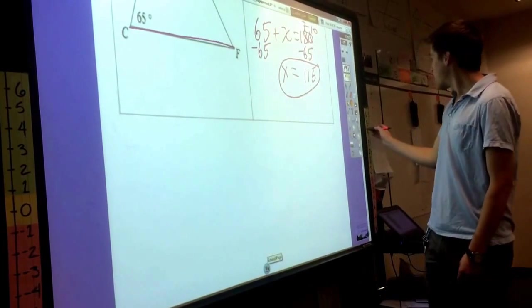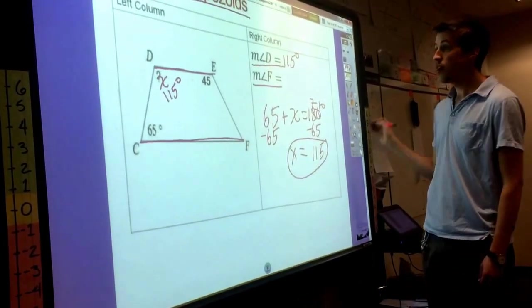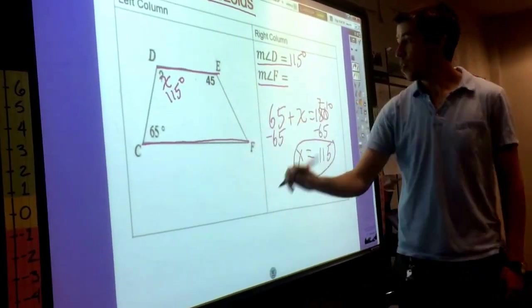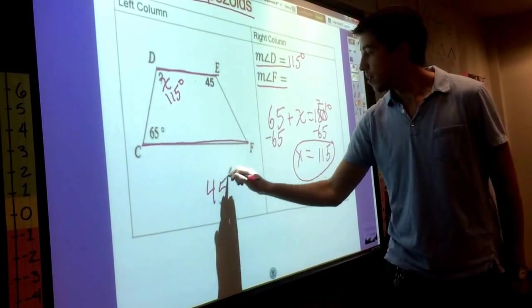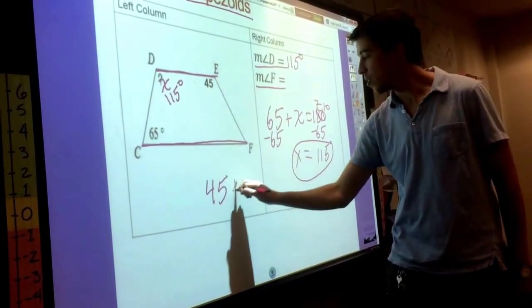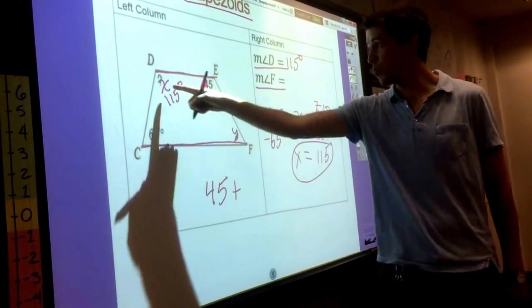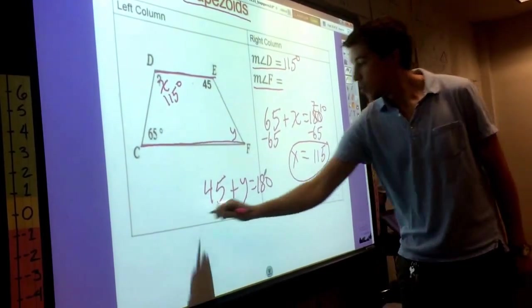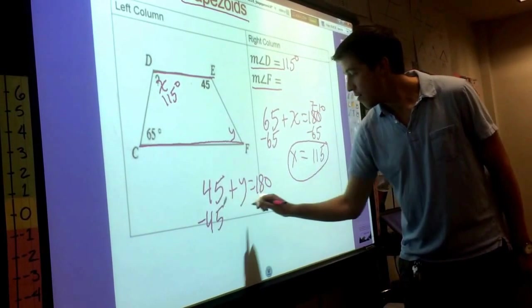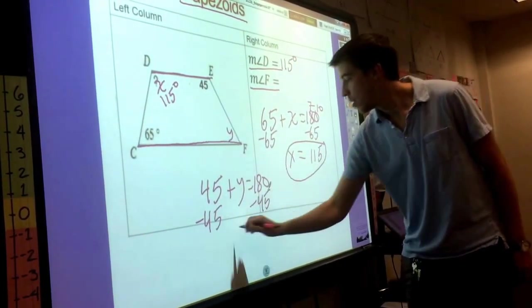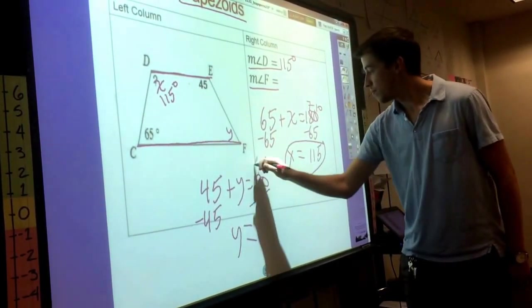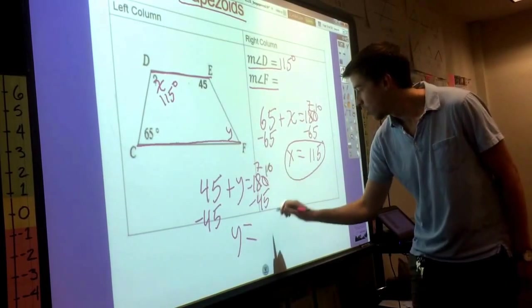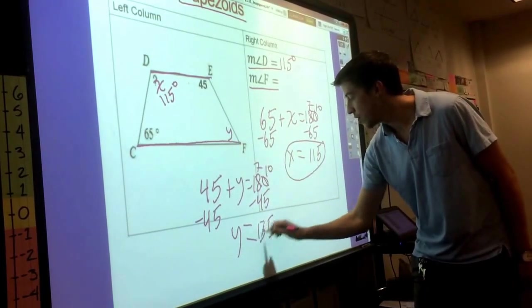Let's figure out angle F now. We know that 45 plus angle F, which we'll call Y because we already used X up there, will equal 180. We'll just have to subtract our 45, and Y will equal 135.